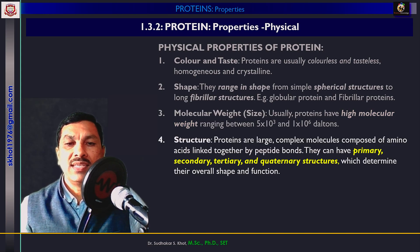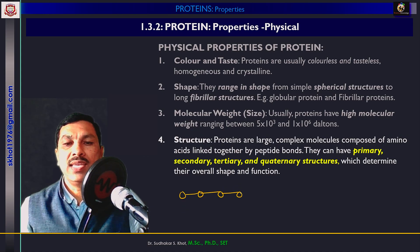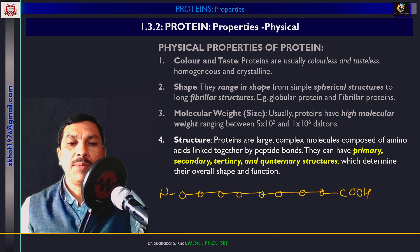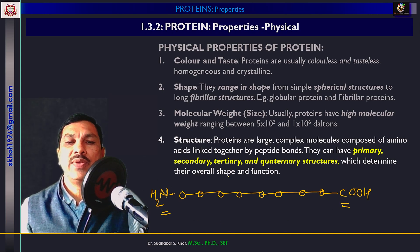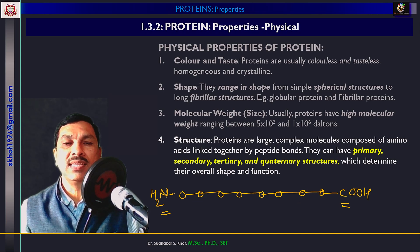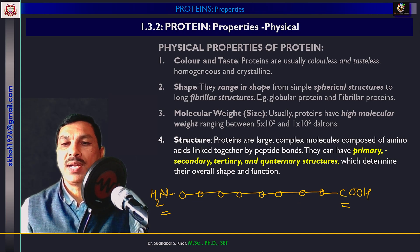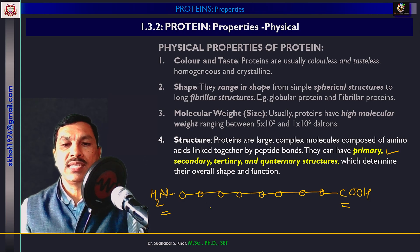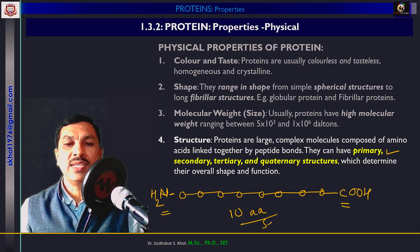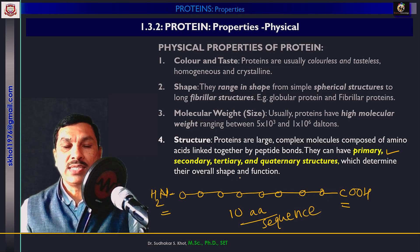Structurally, the primary structure is a chain of amino acids having an N-terminus and a C-terminus. This simple structure where a number of amino acids are linked in a specific sequence is called the primary structure of protein. Primary structure includes the number of amino acids — for example, a polypeptide may have 10 amino acids — and the specific sequence in which they are linked with each other.